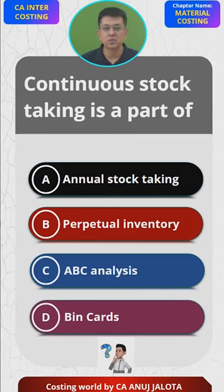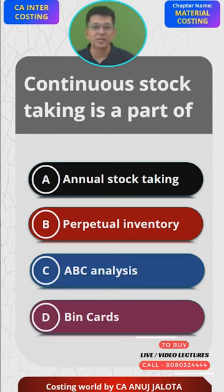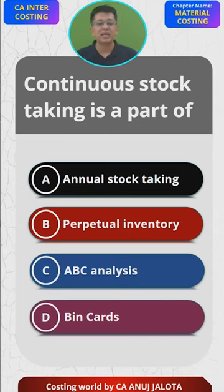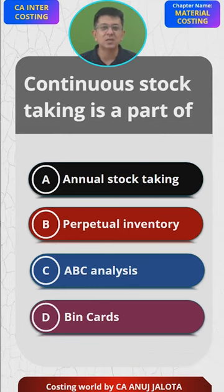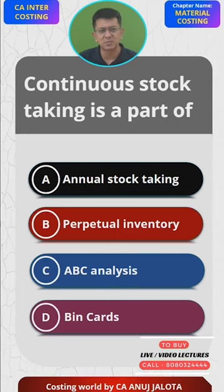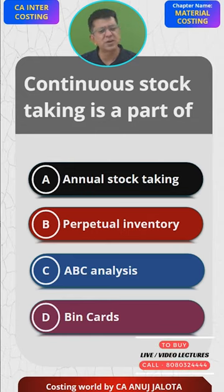We have done this in class many times. Answer before I say it. A cannot be the answer because annual stock taking is done once a year. ABC analysis is basically about which stocks are important and which are not — you don't count the stock for that. Bin cards are there in the storehouse to keep a check on workers. So the answer should be B.